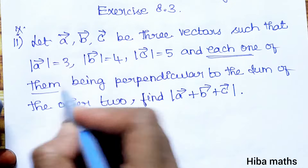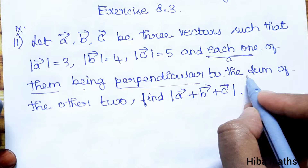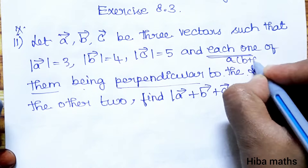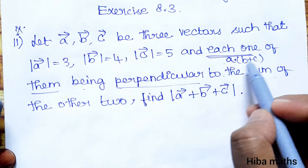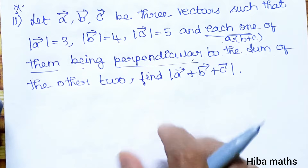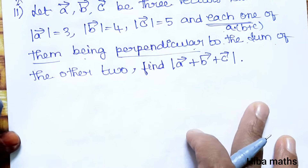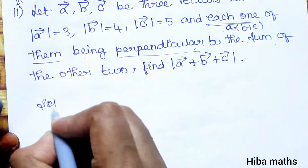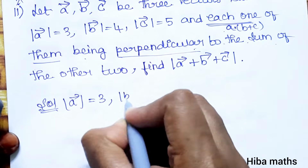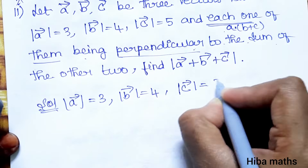Each one of them being perpendicular to the sum of the other. So a is perpendicular to (b + c), b is perpendicular to (a + c), and c is perpendicular to the sum of the other two. We are given modulus of a vector is 3, modulus of b vector is 4, modulus of c vector is 5. We will find the modulus of a + b + c.